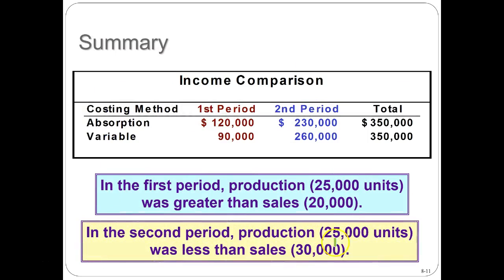Summarizing the two periods: in period one, absorption income was $120,000 versus variable income of $90,000. In period two, absorption income was $230,000 versus variable income of $260,000. The key point is that over the two-year period, total income is the same under both methods. The difference between these two methods is a timing difference — when expenses are recognized — but in the long run they come out the same.